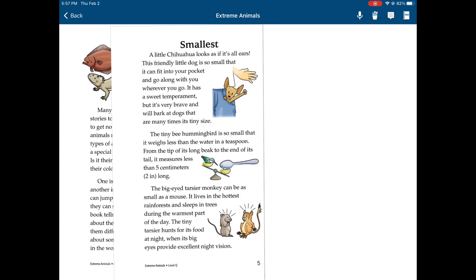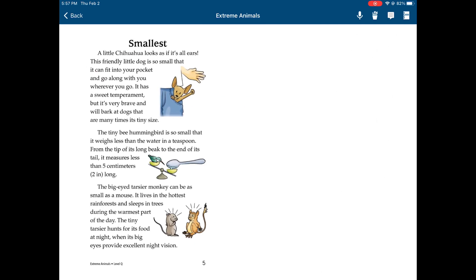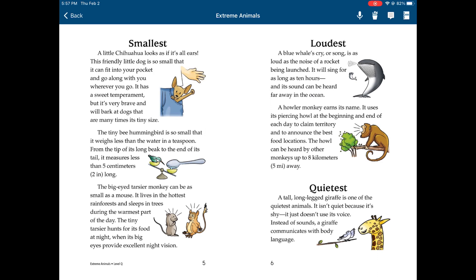Smallest. A little chihuahua looks as if it's all ears. This friendly little dog is so small that it can fit into your pocket and go along with you wherever you go. It has a sweet temperament, but it's very brave and will bark at dogs that are many times its tiny size. The tiny bee hummingbird is so small that it weighs less than the water in a teaspoon. From the tip of its long beak to the end of its tail, it measures less than 5 centimeters long.